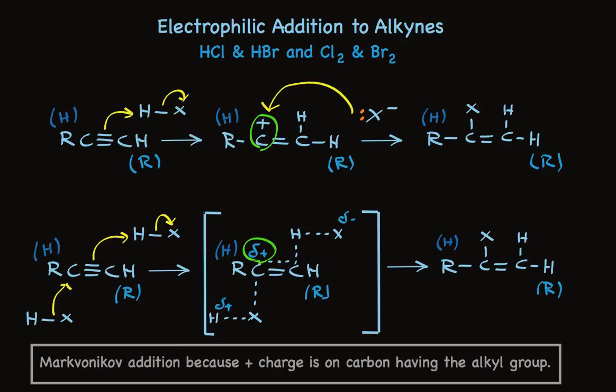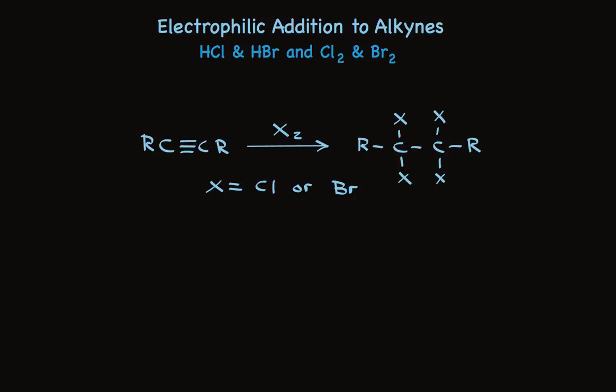Let's take a look at another electrophilic addition to alkynes. When alkynes are treated with molecular halogen, chlorine or bromine, halogen adds twice. The product is a tetrahalide.